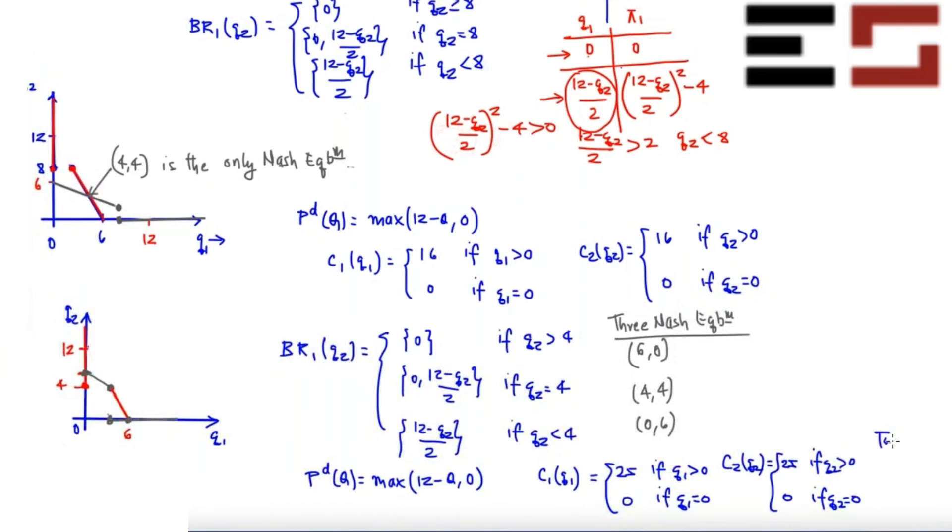So in this case you will find that there are two Nash equilibrium (6,0) and (0,6). So basically, this is not surprising that with very high fixed cost, you will not find that this industry is worthwhile for two firms.